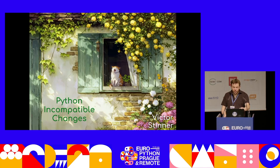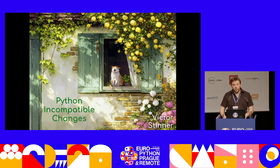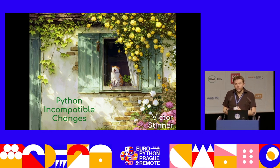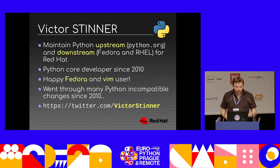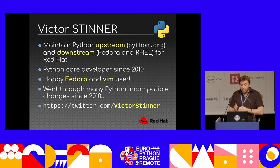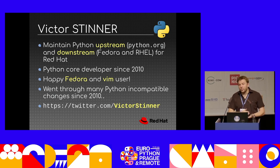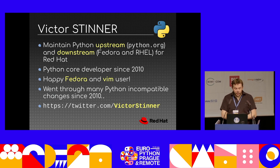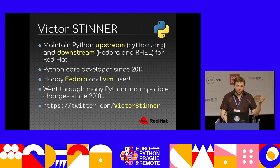Hi everybody. I'm here to talk about how to introduce incompatible changes in Python and, if possible, how to mitigate the risk of incompatible changes. My name is Victor Stine. I'm contributing to Python upstream and downstream for Red Hat. Downstream means that I maintain the Fedora operating system, and upstream means to fix issues in Python upstream. I'm a core developer for 13 years, and sadly, I went through many incompatible changes over those 13 years.